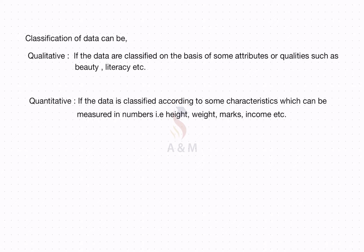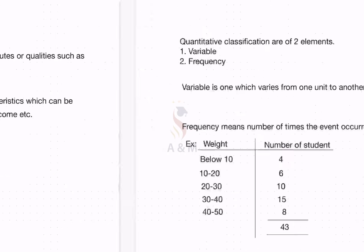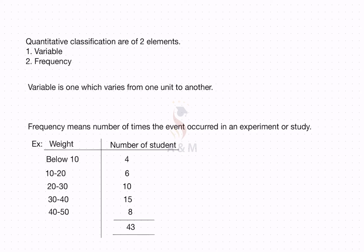Whereas if the data is collected according to some characteristics which can be measured in numbers — i.e. height, weight, marks, income, etc. — it is a quantitative classification. In statistics, we have quantitative classifications, which are of two elements: variable and frequency.